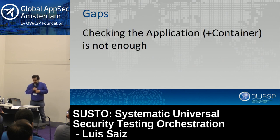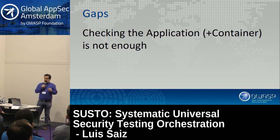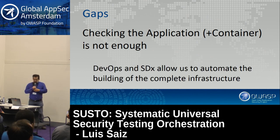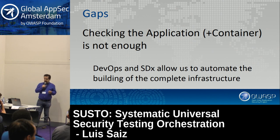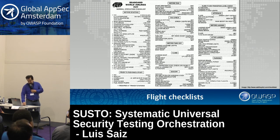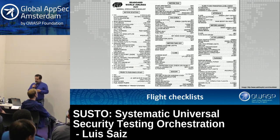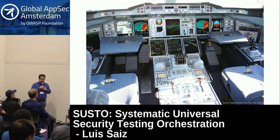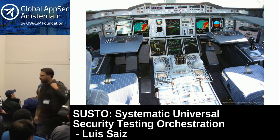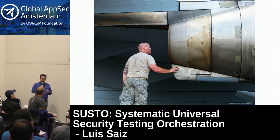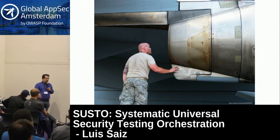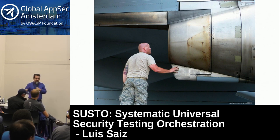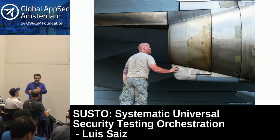But which are the gaps? We are checking the application and now the containers too, but we think that this is not enough. DevOps practices and software-defined everything allow us to automate the building of our complete infrastructure. Like the flight checklist, we have a lot of complex and automated environments. We also have some manual checking — you need to check the engines whatever you are flying, a 747 or a small Cessna.